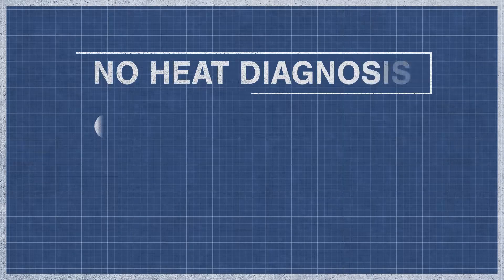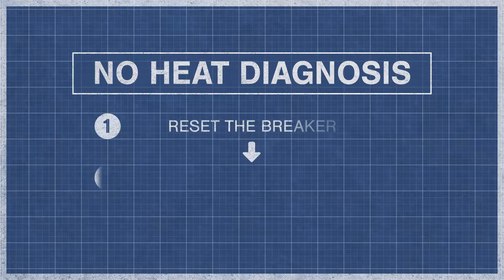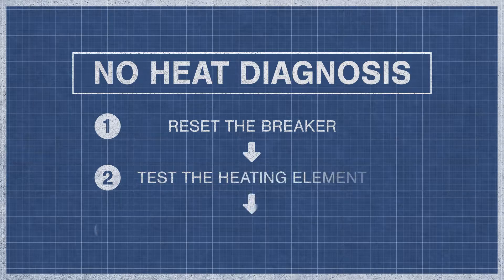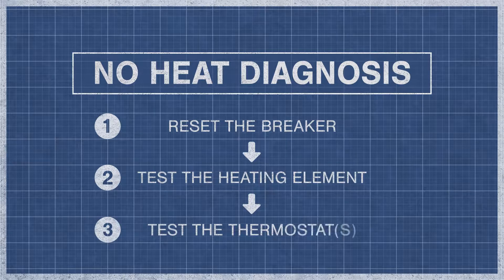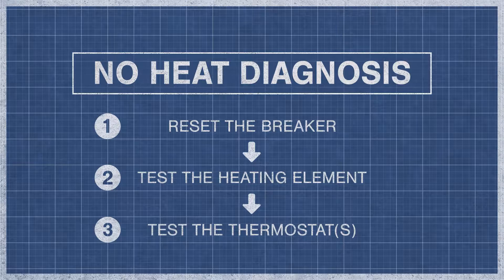When a dryer fails to produce heat, it is best to eliminate the potential problems step by step. For an in-depth guide, watch the videos below. If you've reset your breaker and your dryer still doesn't have heat, then move on to the continuity test.